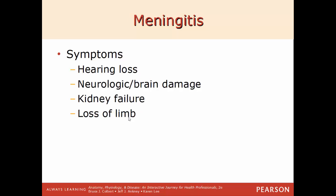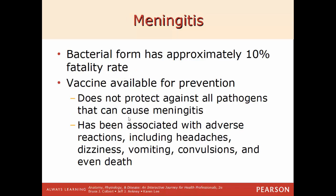Symptoms of meningitis include fever, nausea, a very stiff neck — usually a good sign of meningitis — skin rash, and non-specific headaches. More severe symptoms include kidney failure, hearing loss, brain damage, and loss of limb. The bacterial form has a death rate of about 10%. There is a vaccine available for prevention, but it does not protect against all pathogens that cause meningitis. The vaccine has also been associated with side effects including headaches, dizziness, vomiting, convulsions, and even death.